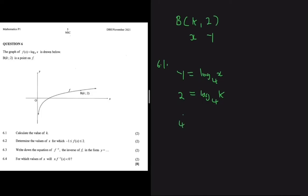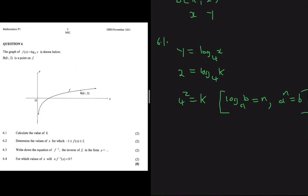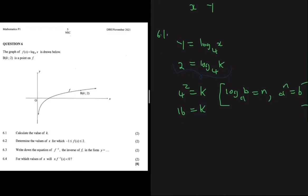This gives us 4 to the power of 2 equals k. The log rule states: if log base a of B equals n, then a to the power n equals B. Applying that rule here, 4 squared is 16, so k equals 16. Every time, the base of the log carries the number on the other side and equals the argument.